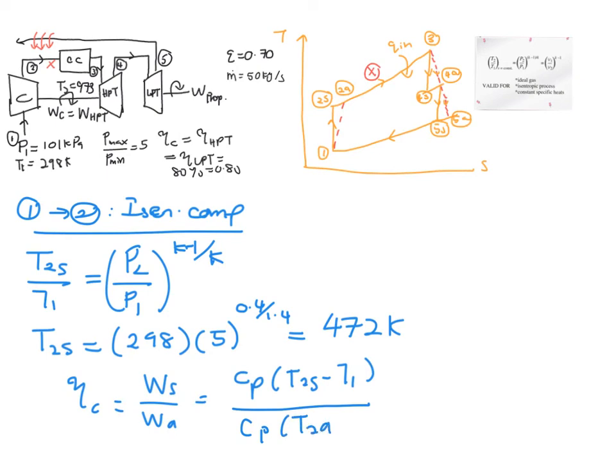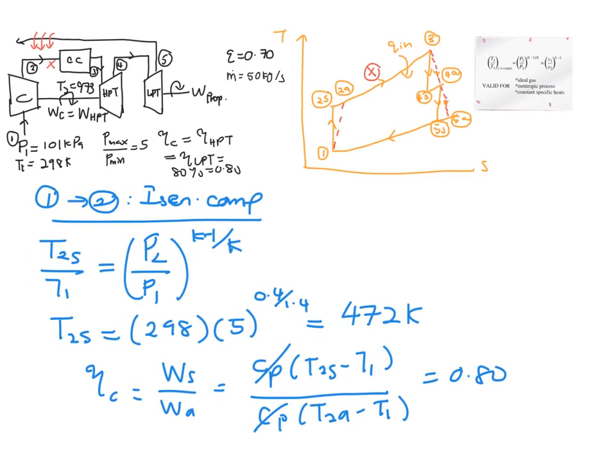T2A minus T1, equals 0.8. Now, because the CP value is the same, you cancel out the CP term. And when you rearrange this mathematical expression, you will finally get T2A equals 505.5 Kelvin